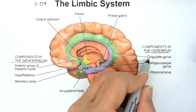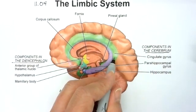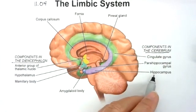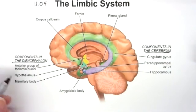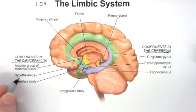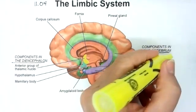There are six pieces of this limbic system total. We have in green the cingulate gyrus, in purple the parahippocampal gyrus, the hippocampus, the mammillary body, the amygdaloid body, and then the hypothalamus and thalamus. We're really only going to focus on the parts that I want you to know, so I'm going to grab my highlighter.